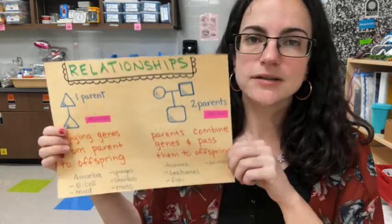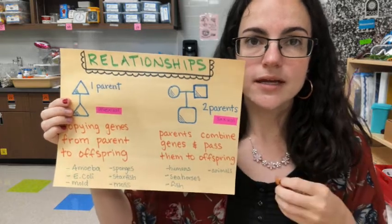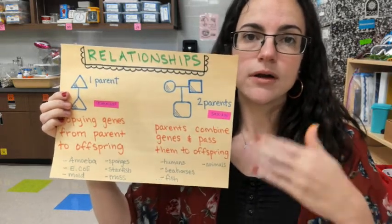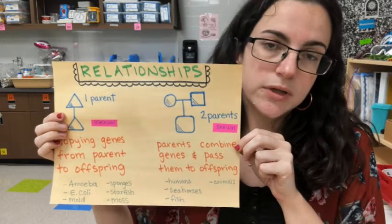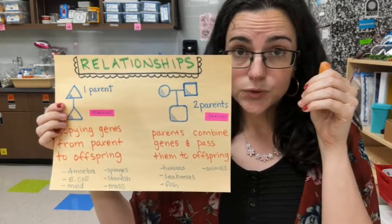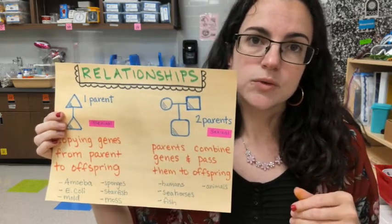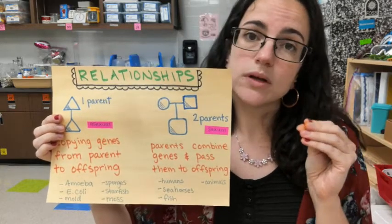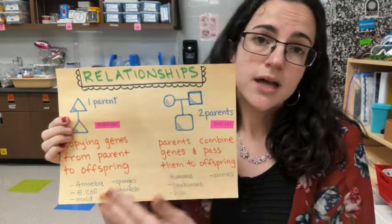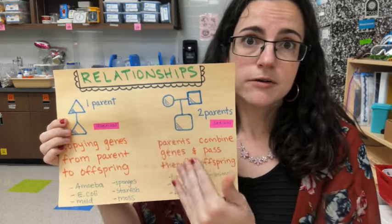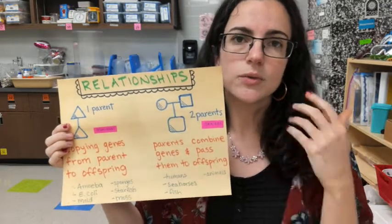And last but not least, relationships. How are these living organisms going to create offspring to continue on with the different generations to come? Some living organisms rely on just themselves to create offspring — they almost make copies of themselves. But there are other organisms that have to combine their genes with another gene in order to create their offspring. Together, this is called reproduction.